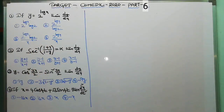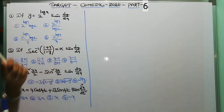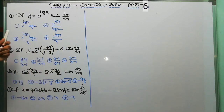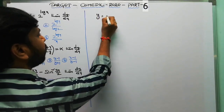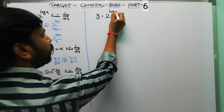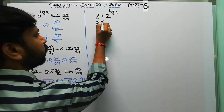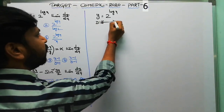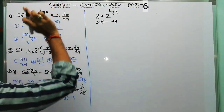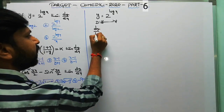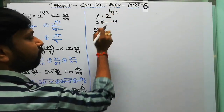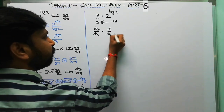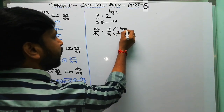First question: if y is equal to 2 to the power of log x, then dy/dx equals what? It's a very simple question. y equals 2^(log x), and we need to differentiate with respect to x. So dy/dx is the derivative of 2^(log x) with respect to x.